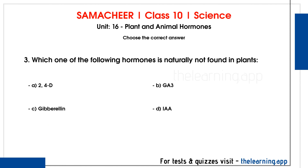Third question: Which one of the following hormones is naturally not found in plants? Options are A) 2,4-D, B) GA3, C) Gibberellin, D) IAA. The last three options are naturally occurring hormones. The first one, 2,4-D, is an artificially synthesized auxin.